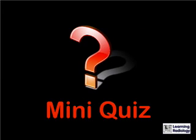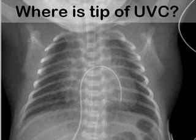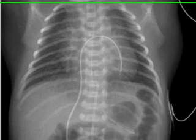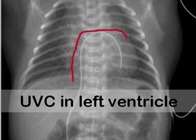It's time for the mini quiz — get ready to pause your computer or MP3 player. Where is the tip of this umbilical venous catheter? The catheter extends up the vena cava into the right atrium, across the interatrial septum into the left atrium, and then winds up in the left ventricle.